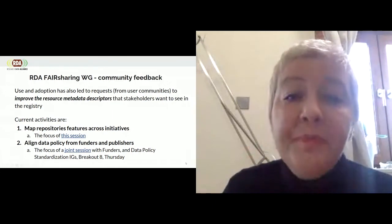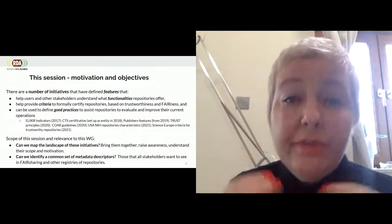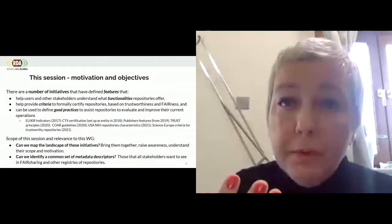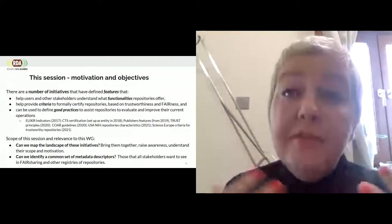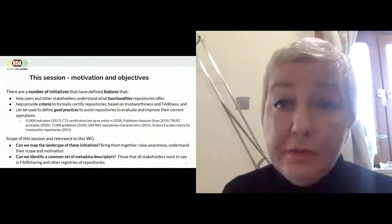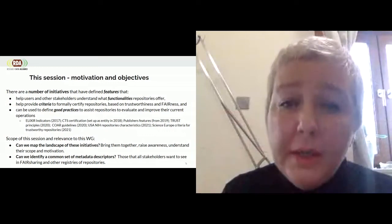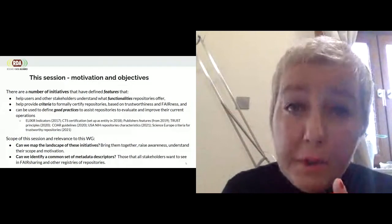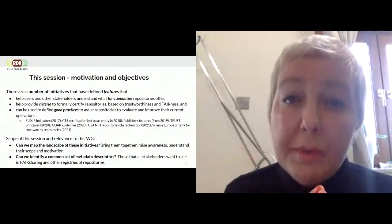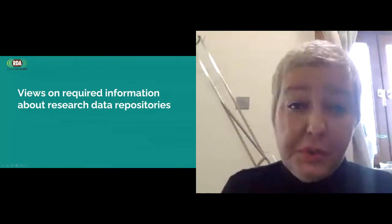My last slide brings us back to the reason for this session. To describe repositories, there are a number of initiatives that have defined features — using this word to refer to criteria, functionality, and good repository guidelines — which various groups have developed, and they are very important. We are bringing them together in this session because we want to understand what they've done and why. But especially, we want to understand: can we map this landscape of initiatives? And can we identify a common set of metadata descriptors for repositories that we can use to enhance the description of repositories in FAIRsharing, or any other registry of repositories?